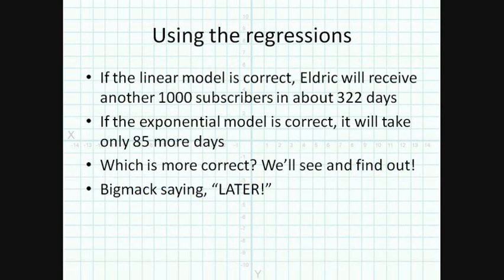So using these regressions, a number of questions we can ask. How long will it take Eldrick to reach another 1,000 subscribers? If we use the linear model, we have a constant slope. So we can just do 1,000 divided by 3.1. And that'll take us about 322 days or ten and a half months, more or less. If it turns out the exponential model is better suited, Eldrick will get another 1,000 subs within 3 months, which is very exciting.